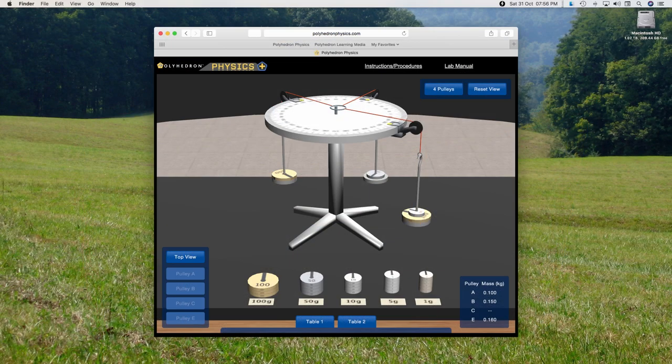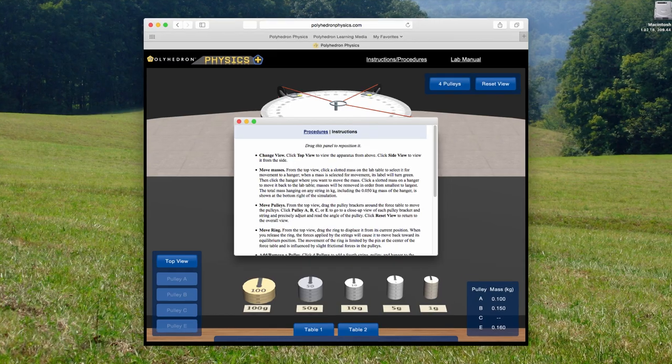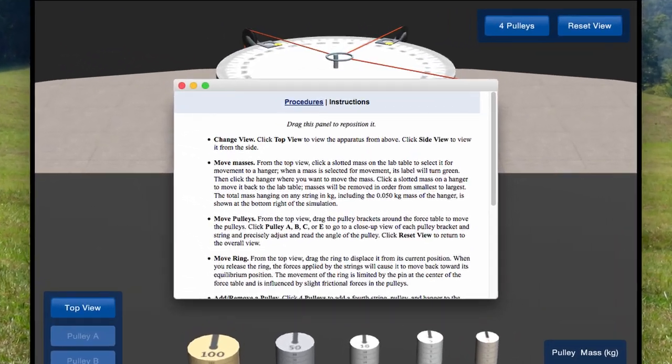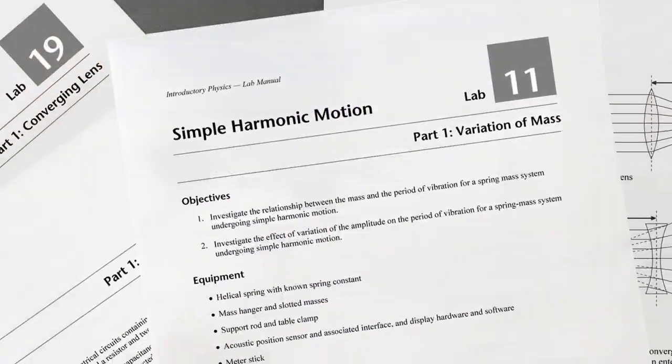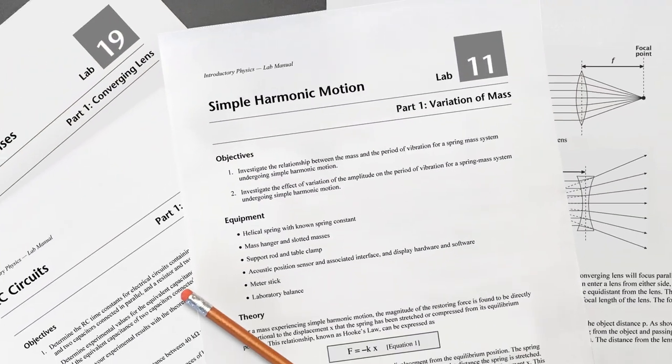Polyhedron Physics simulations include only the instructions for manipulating the virtual equipment. This option is best for instructors who prefer to use their own experimental procedures and evaluations.